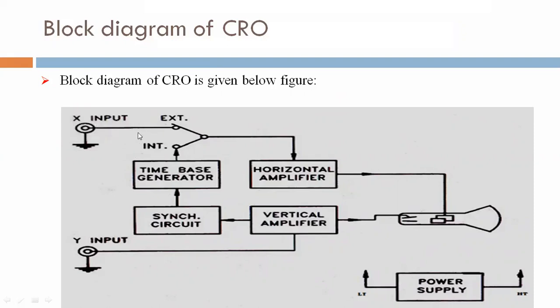Here, we are seeing X input. It is connected with this external and internal terminal. Here, Y input is there. It is connected with this vertical amplifier. Here, CRT, cathode ray tube. It is the heart of CRO. Here, power supply is there. Low tension and high tension. Here, sync circuit is there. Here, time-based generator. Here, horizontal amplifier is there. So, these components are making block diagram of CRO.